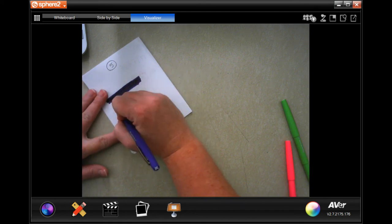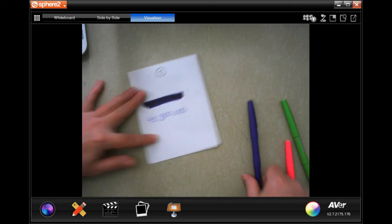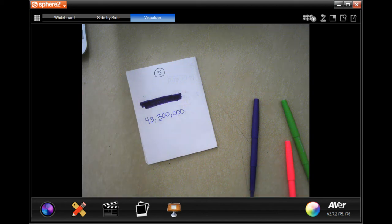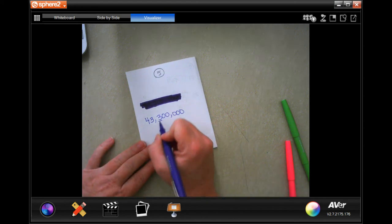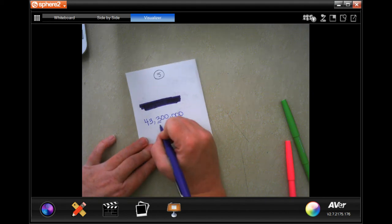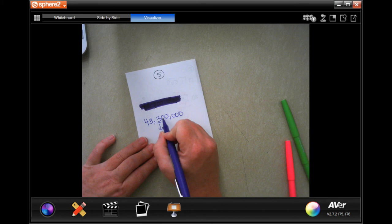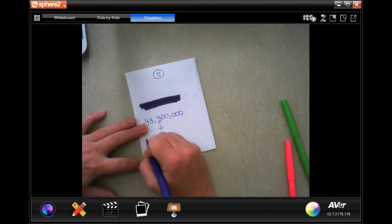Well, underline the 3 because that's the last number that's not a zero. So that place value is ones, tens, hundreds, thousands, ten thousands, hundred thousands. That's your answer: hundred thousands.